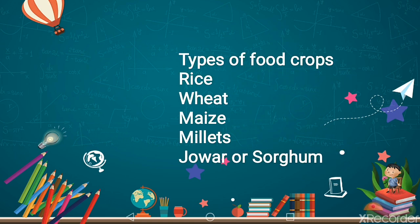Today our learning objectives are: first of all, types of food crops. In this section we are going to understand five types of food crops one by one: rice, wheat, maize, millet, and jowar.